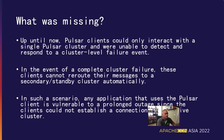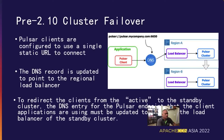So what was missing prior to 2.10? Up until now, Pulsar clients could only interact with a single Pulsar cluster and were unable to detect and respond to a cluster-level failure event. In the event of a complete cluster failure, these clients cannot reroute their messages to a secondary or standby cluster automatically, which would eventually lead to prolonged outages at the application layer. Prior to the 2.10 release, the best you could do was provide a single static endpoint to your Pulsar cluster. Oftentimes, this connection URL is provided by a configuration file and remains static the entire lifecycle of the application.